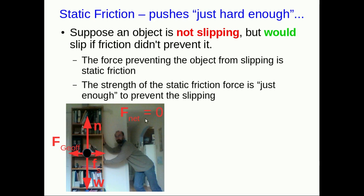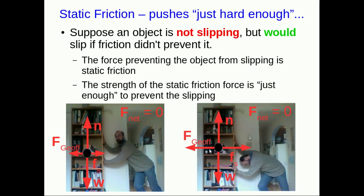Well, that means, for F net to be zero, that static friction force has to have a strength exactly equal to the force that I'm exerting on the shelves. And, if I push harder, and the shelves still don't slide, then that static friction force must have increased to exactly cancel the force that I'm exerting on them.